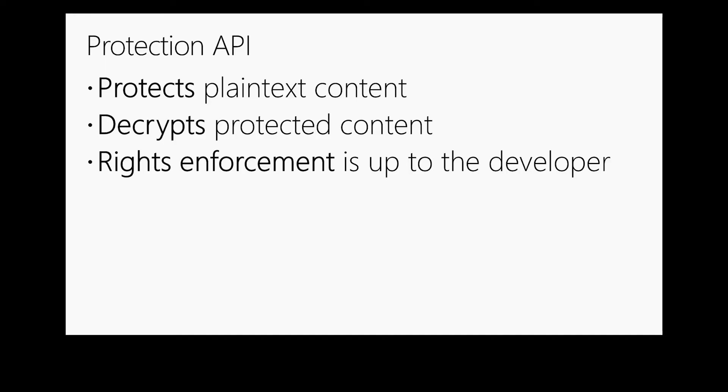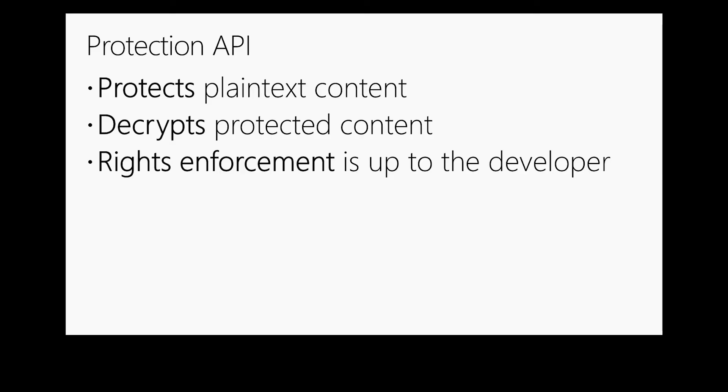We also have the protection API, which allows you to either protect files or to decrypt files. Typically this will be if you own a file format — for example, if you're a 3D printing company, you'd use this to apply protection to your own file format and then read and display it in your own application. The rights enforcement component means that if I open a document in Word, the owner can restrict my ability to print or save. Using this API as the software developer, you enforce that in your application, but until it's opened, it's encrypted and only an authorized individual can open it.